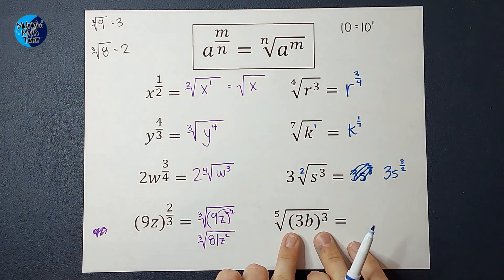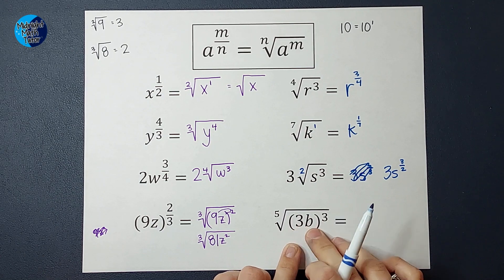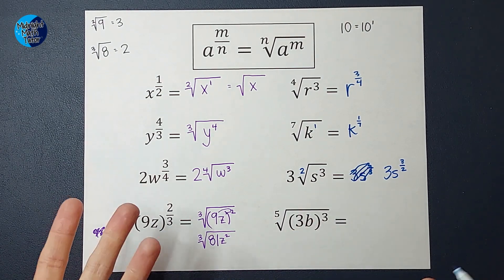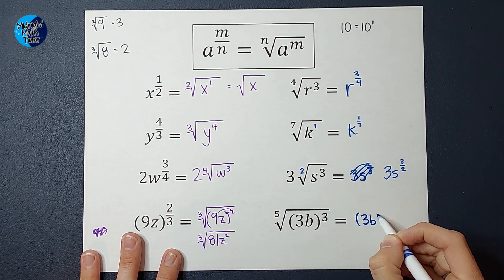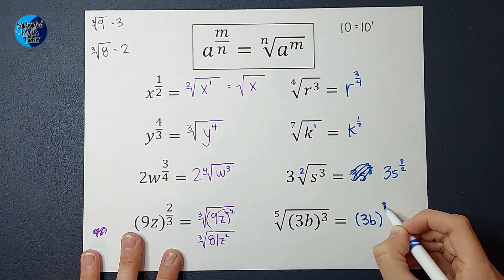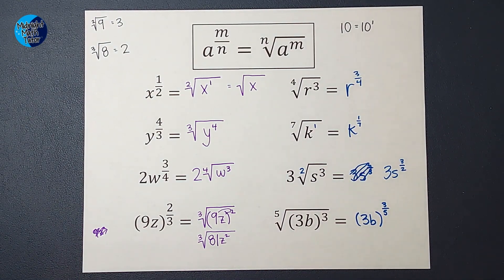Last one, again, just like over here, the cubed applies to the 3 and the b because of those parentheses. So it's going to be 3b to the 3 fifths power. All right, I hope this made sense. Thanks, bye!